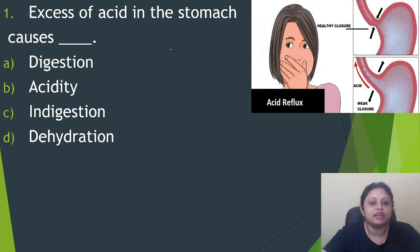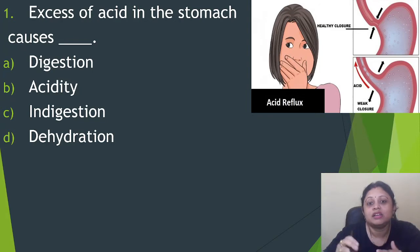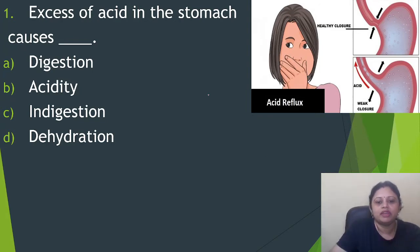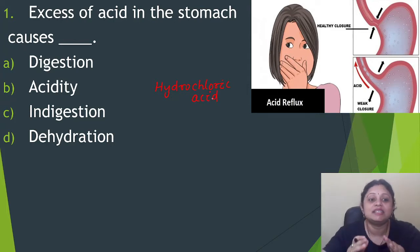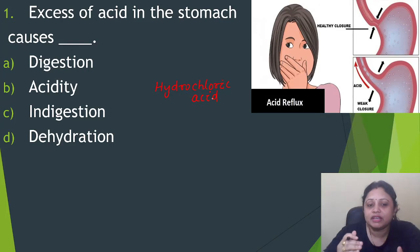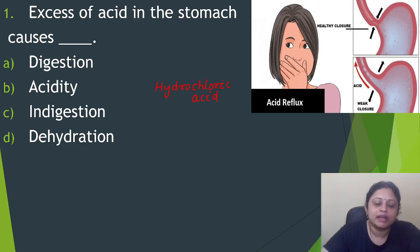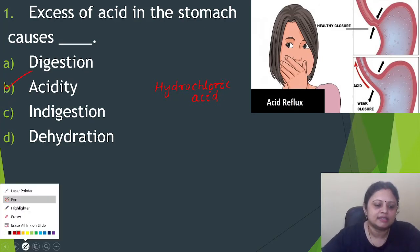The first question: excess of acid in the stomach causes? Option A, digestion. B, acidity. C, indigestion. D, dehydration. You know that our stomach secretes an acid — the name of the acid is hydrochloric acid. Our stomach secretes that acid and it helps in the digestion of food. But if there is excess acid secretion, then it will cause acidity. So the correct answer is option B, that is acidity.